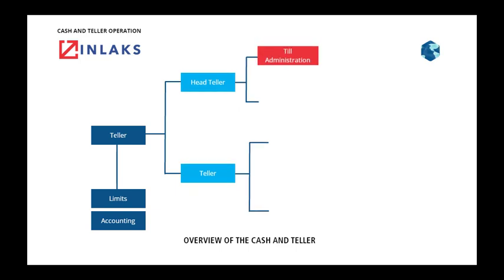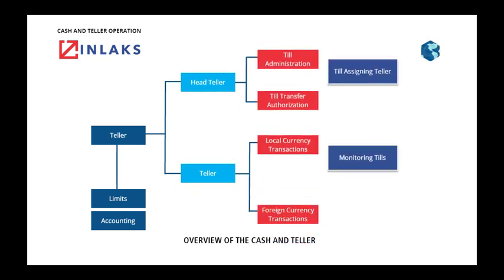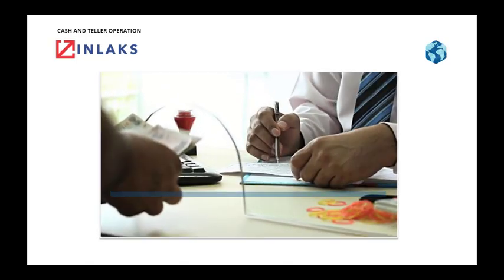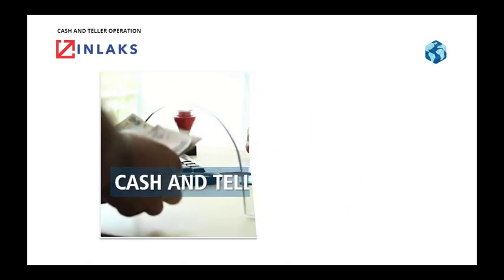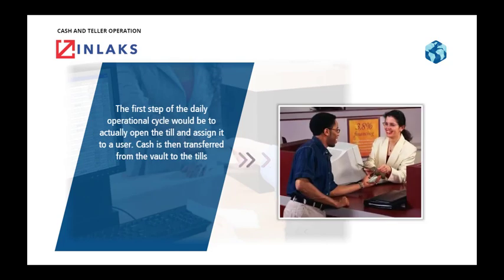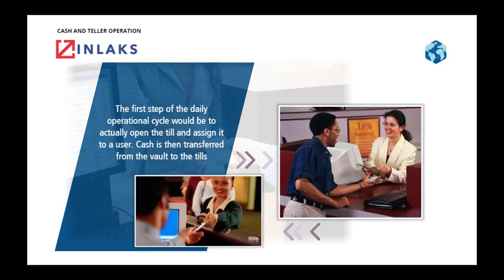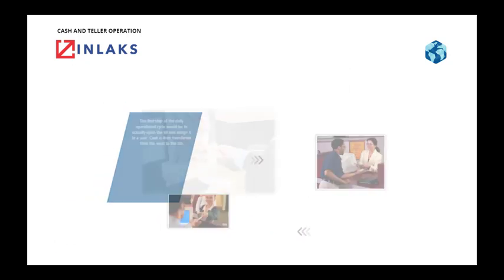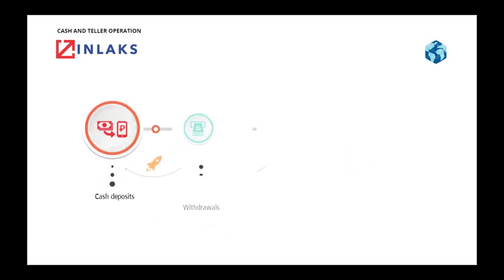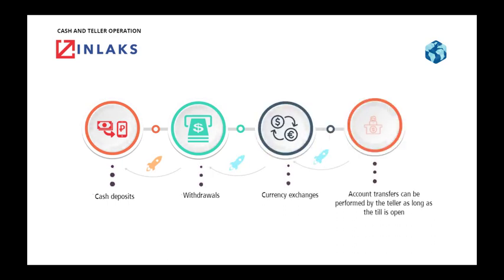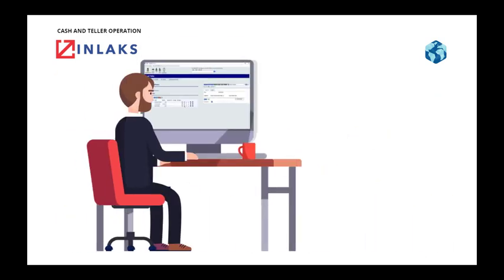The following shows an illustrated overview of the cash and teller. The first step of the daily operational cycle would be to open the till and assign it to a user. Cash is then transferred from the vault to the till. Various operations like cash deposits, withdrawals, currency exchanges and account transfers can be performed by the teller as long as the till is open during the day.